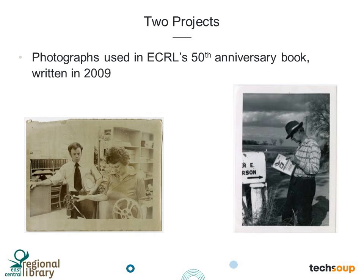We came away with two successful projects. The first was the photographs used in East Central Regional Library's 50th Anniversary Book, written in 2009. Those photographs included library buildings and staff members both past and present, services over the years such as the bookmobile, the card catalog, records, cassettes, our mail-a-book program, and the 16-millimeter films and projectors.